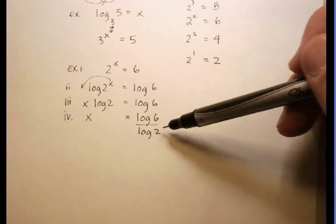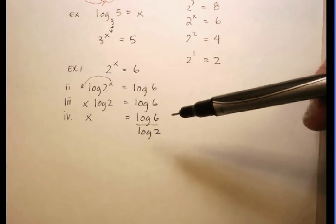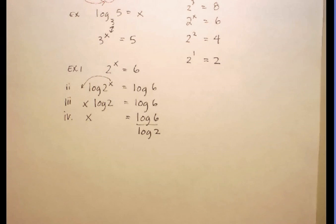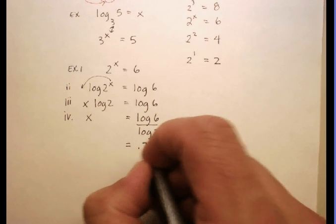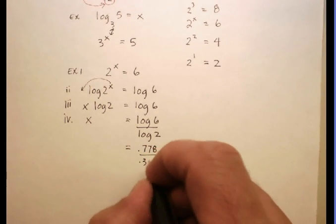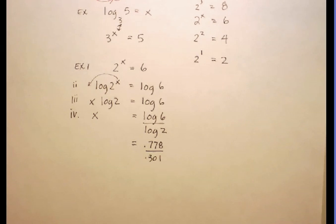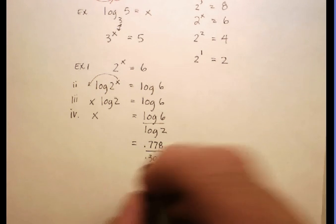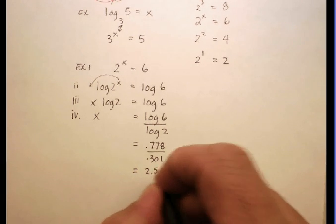Now, why did I do that? What is this going to be? Actually, I'm going to put this into my calculator, and I'm going to figure out what log 6 is, and then just divide it by log 2. log 6 is actually equal to 0.778. And then log 2 is equal to 0.301. And 0.778 divided by 0.301 is going to be equal to 2.585.